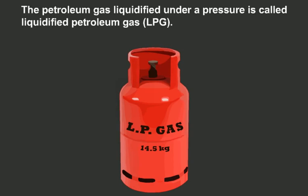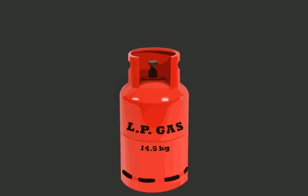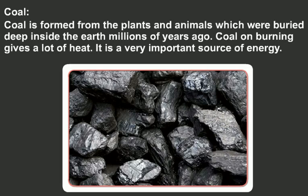Petroleum gas liquefied under pressure is called liquefied petroleum gas, or LPG. It is obtained in cylinders and is the gas we use for cooking. A domestic gas cylinder contains about 14 kg of LPG. The total world petroleum resources are estimated at around 700,000 million barrels, and petroleum accounts for about 38 percent of the world's energy demand, much of which is used in transport.